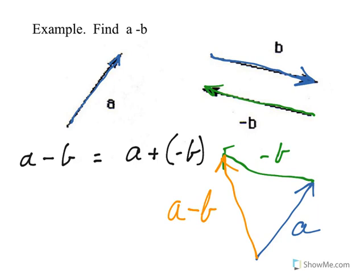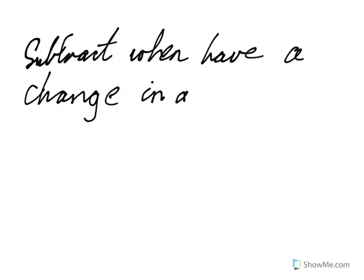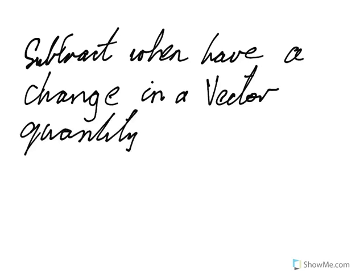Typically we subtract vectors when we have a change in some quantity, or more specifically a vector quantity. That word change is the one missing in the red. A couple of examples there is change in position. In your notes, delta x, delta meaning change in,